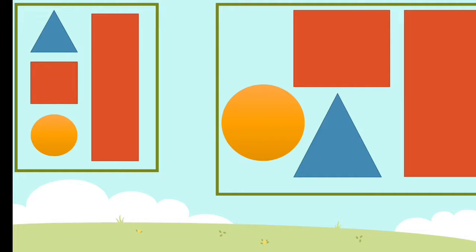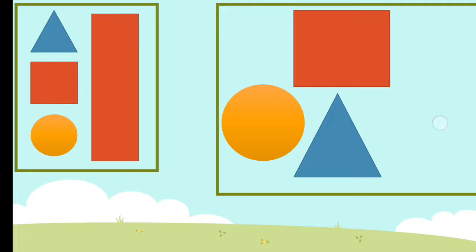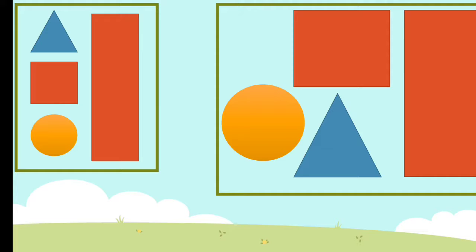Do you see all these shapes? The square in the first box and the square in the second box are red in color. Even the rectangle in the first box and the rectangle in the second box are red in color. The triangle in the second box and in the first box are the same color, which is blue. And the circle in the first box and the circle in the second box are yellow in color.